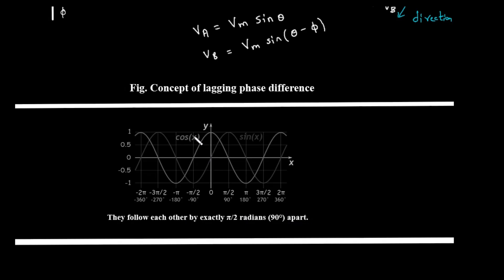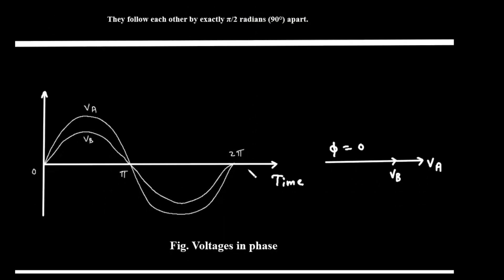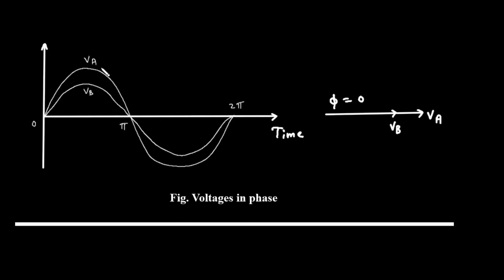If you look closely, the cosine wave is at its peak when the sine wave is at 0 and rising. The cosine wave is essentially a sine wave that has been shifted to the left by 90 degrees. Therefore, we can say that the cosine function leads the sine function by 90 degrees, or pi over 2 radians. Next, we have a figure showing voltages in phase. In the waveform diagram, the two voltages VA and VB are perfectly aligned — they reach their peaks at the same time, cross zero at the same time, and reach their minimums at the same time. The phase difference phi is equal to 0. In the corresponding phasor diagram, the two phasors for VA and VB would be pointing in the exact same direction, lying on top of each other.